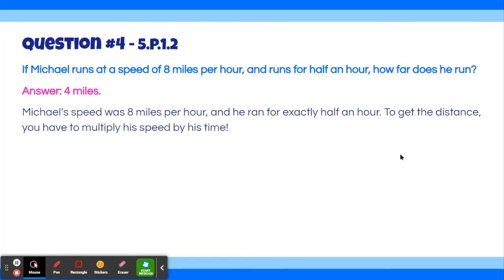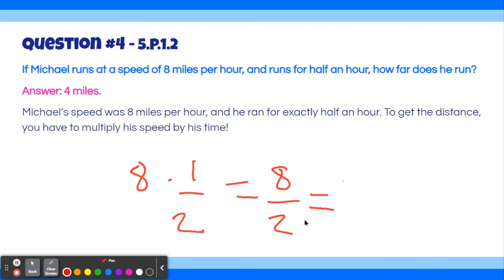We know this because Michael's speed was 8 miles per hour and he ran for exactly half an hour. To get the distance, you have to multiply his speed by his time. Alright, so let's do that here. We know Michael ran for 8 miles per hour and he ran for half an hour. So we multiply 8 by 1 half and we get 8 over 2, which is 4. So Michael's speed was 8 miles per hour. You multiply that by how long he ran, which was half an hour, and then you get the distance, which was 4 miles.